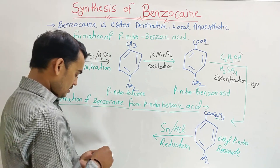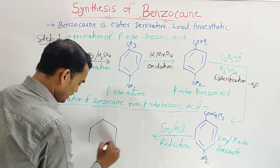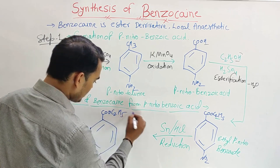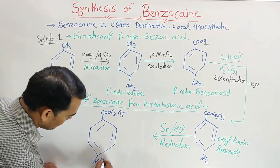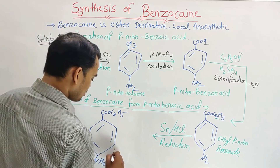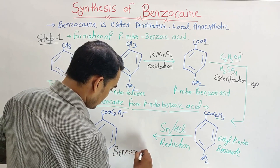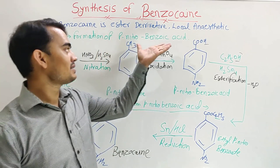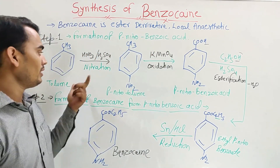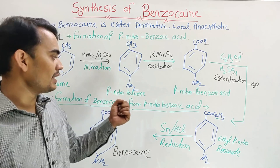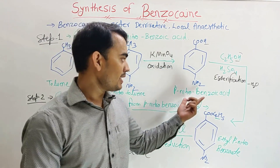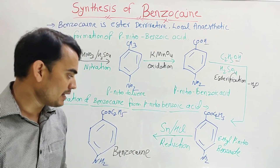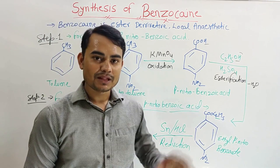By the reduction, we get our final product, benzocaine. Only one thing changes: the NO2 group is converted into the NH2 group, giving COOC2H5 with NH2 — and that is benzocaine. So it is a very easy synthesis. In step 1, we synthesized para nitro benzoic acid from toluene via nitration then oxidation. In step 2, esterification with ethanol gave ethyl para nitrobenzoate, and reduction gave the final product benzocaine. Thank you.